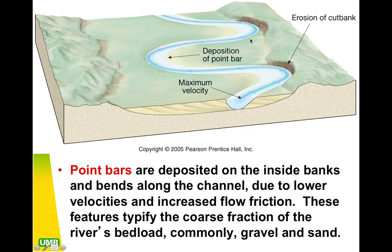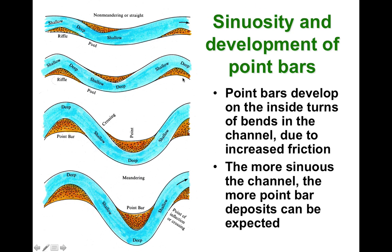The deposition bank is called a point bar. Point bars are deposited on the inside banks and bends along a channel due to lower velocities and increased flow friction. Water moves slower at this point in a meander, resulting in nice sandy beaches and deposition of sediments. Rivers with larger meanders will have larger deposition banks and larger cut banks, while newer rivers with smaller meanders will have smaller versions of each.